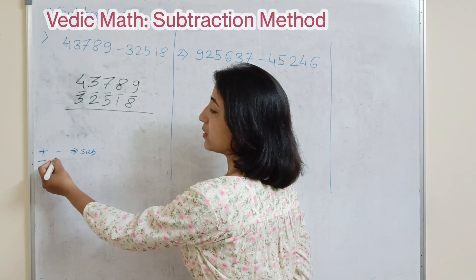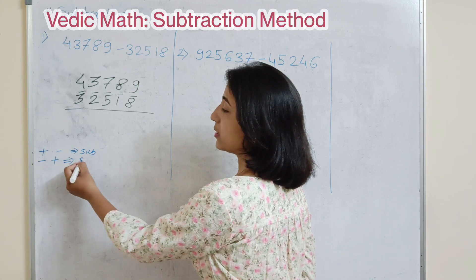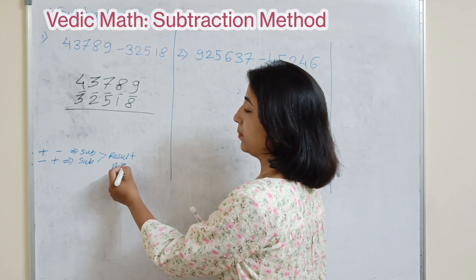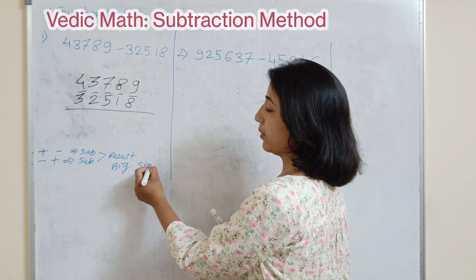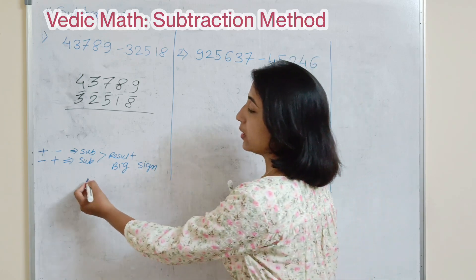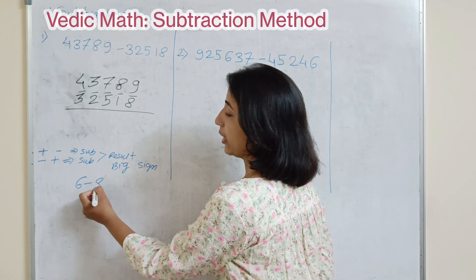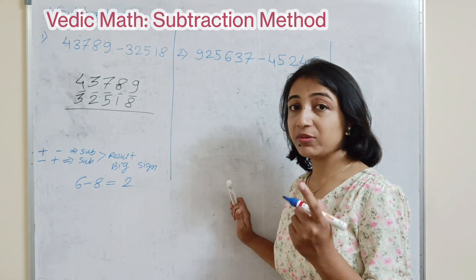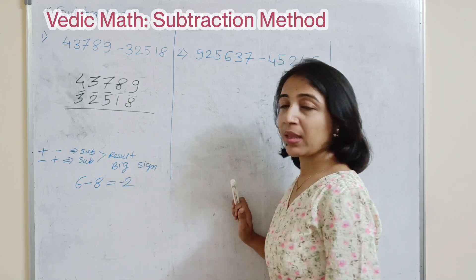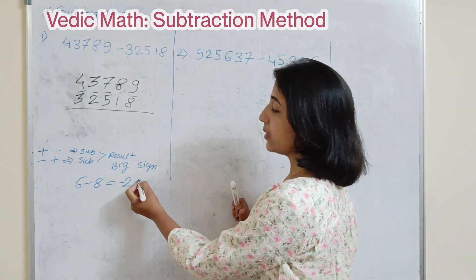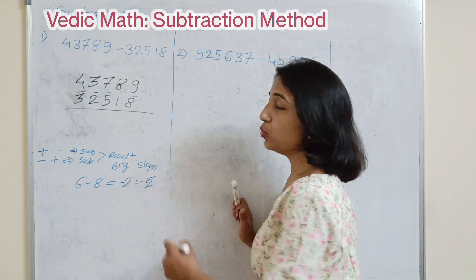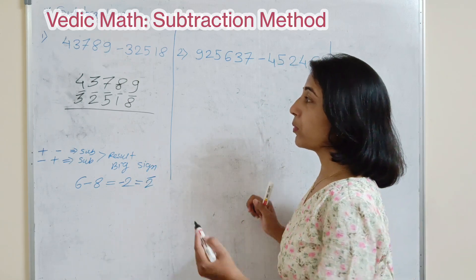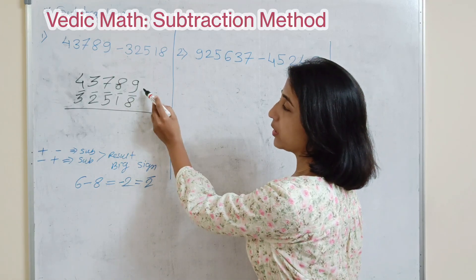If the number is minus-plus, again you have to do the subtraction, but the final result will carry the sign of the bigger number. For example, 6 minus 8 gives 2, but since 8 is the bigger number and it is negative, the answer is minus 2. In Vedic Maths, we denote this as 2-bar, where the bar represents it is a negative number.